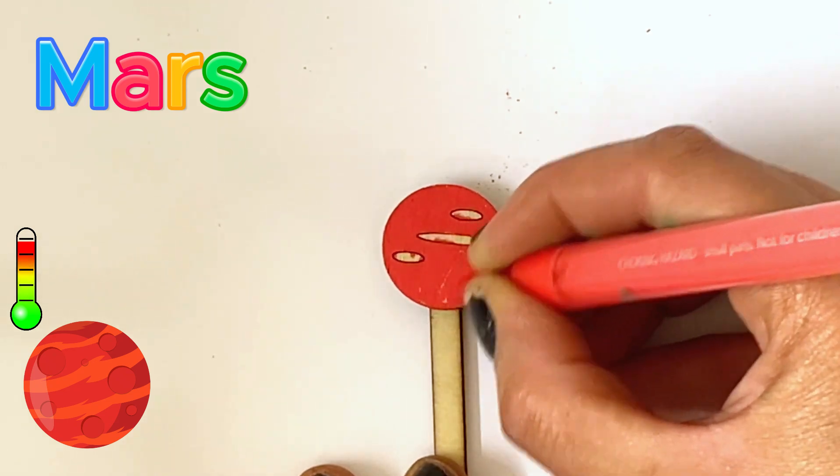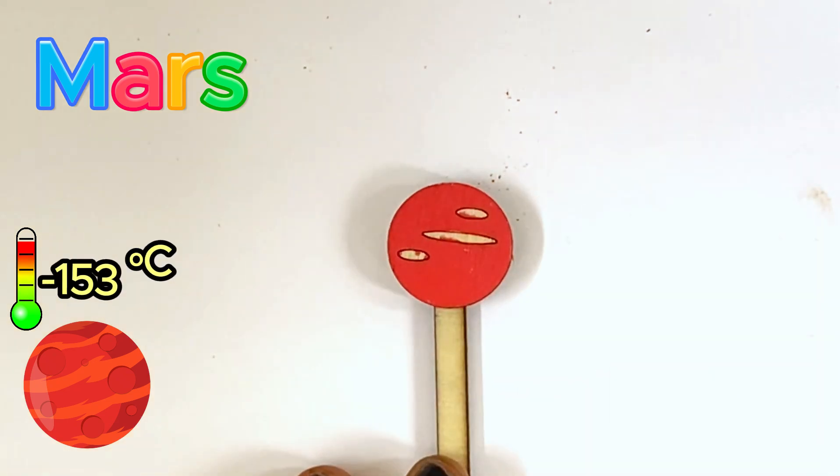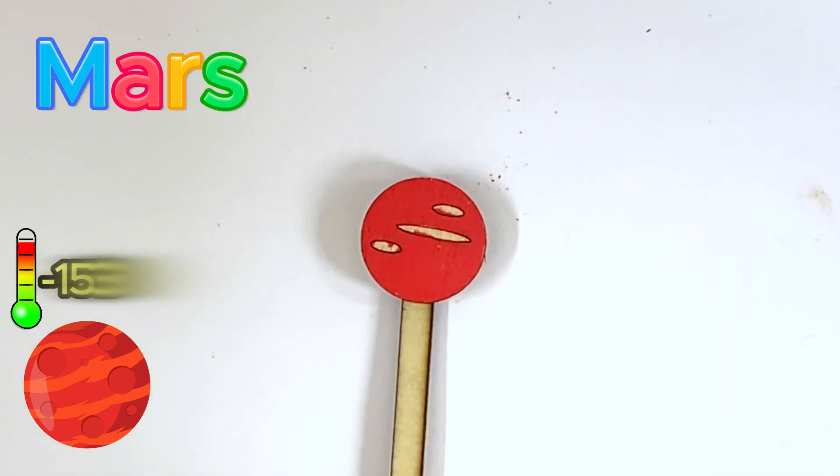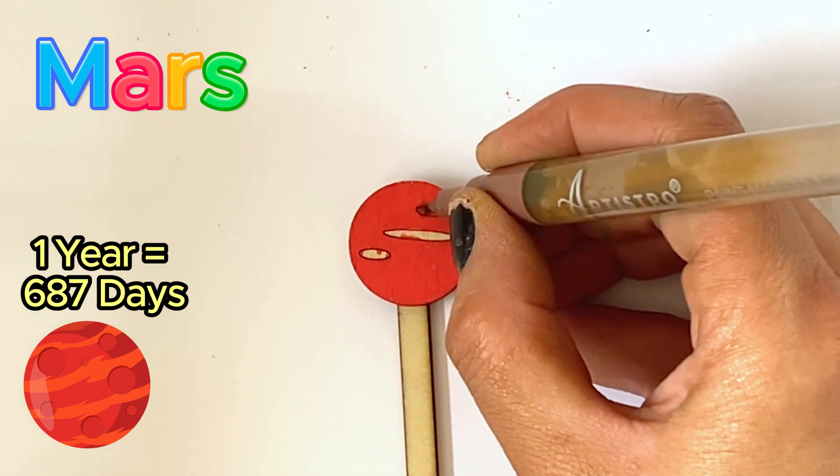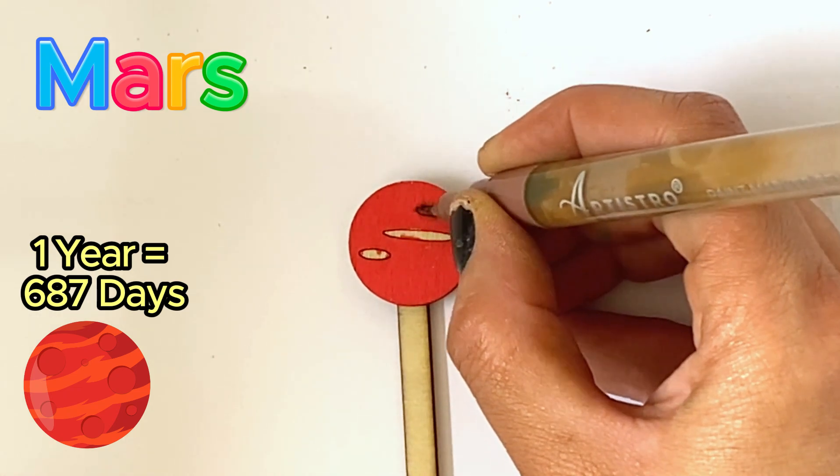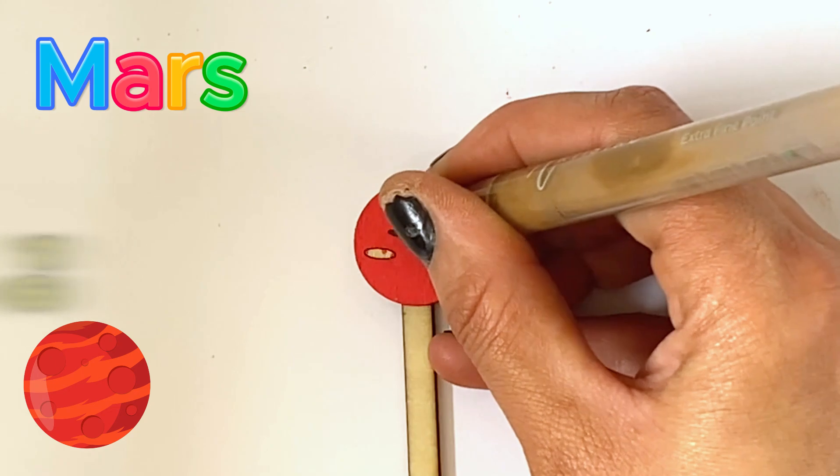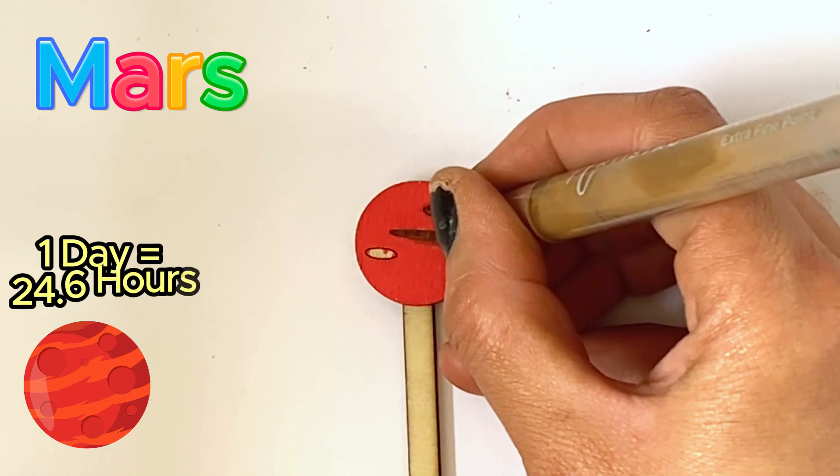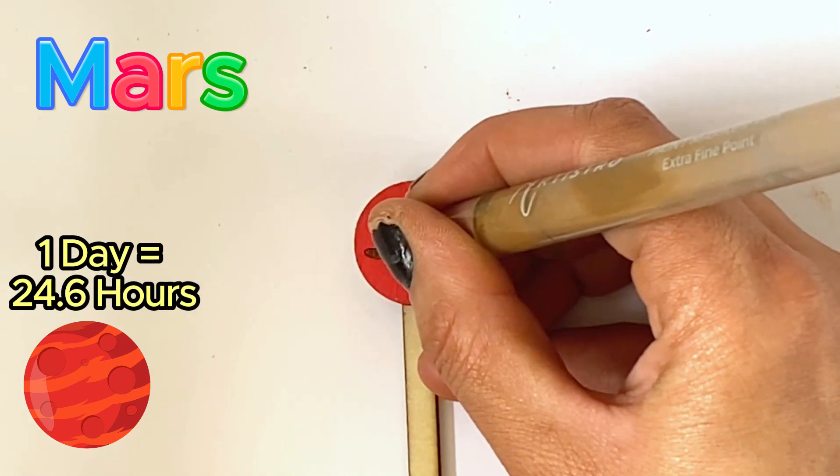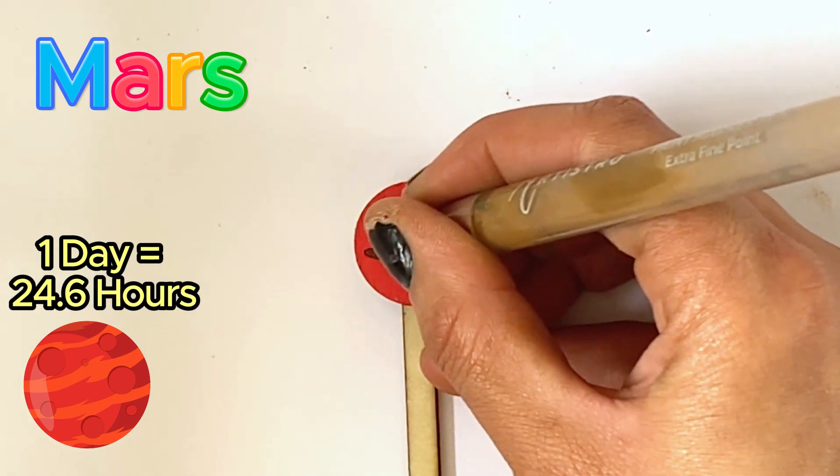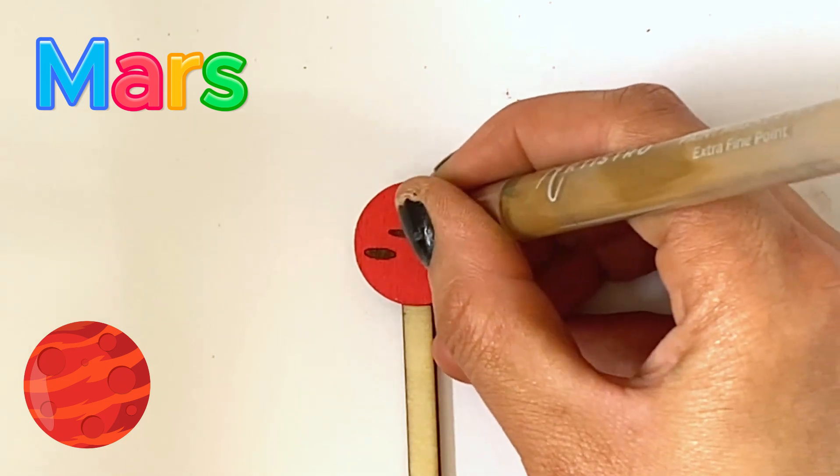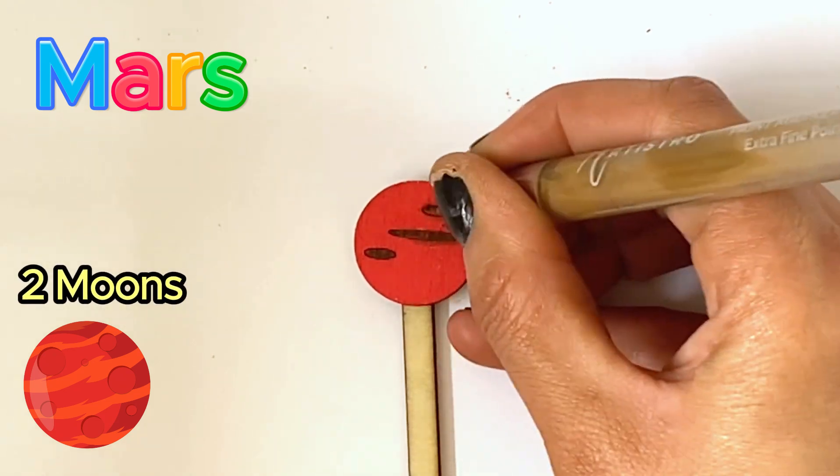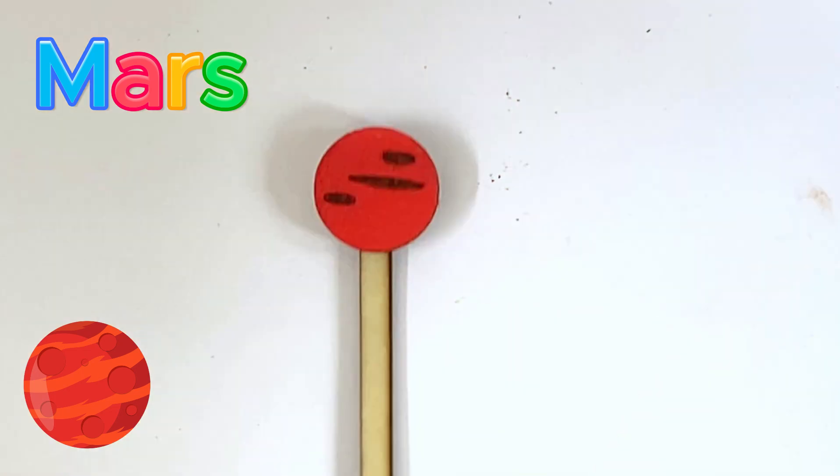However, at its poles, it can have lows of about minus 153 Celsius. It takes 687 days for Mars to orbit the Sun once, which is almost double our Earth year. However, Mars has a similar day length to Earth as a rotation on its axis once takes 24.6 hours, making the day just slightly longer than our day. Mars has two moons called Phobos and Deimos. And here is our finished Mars.